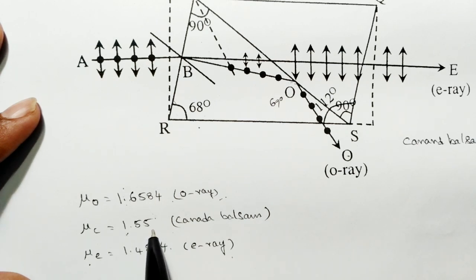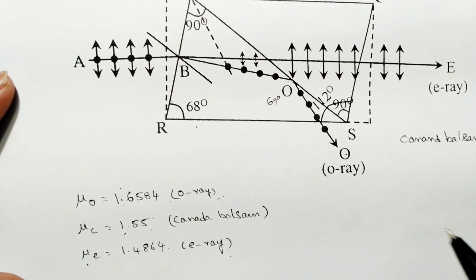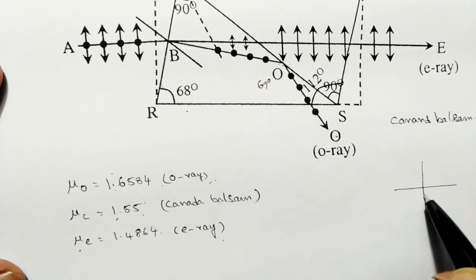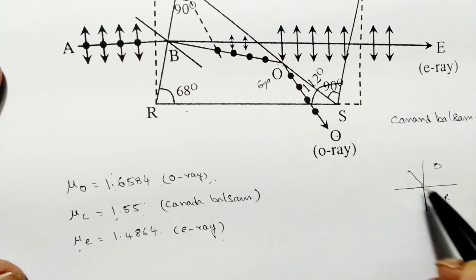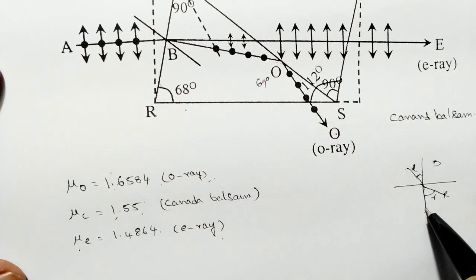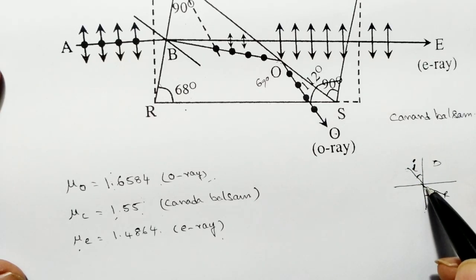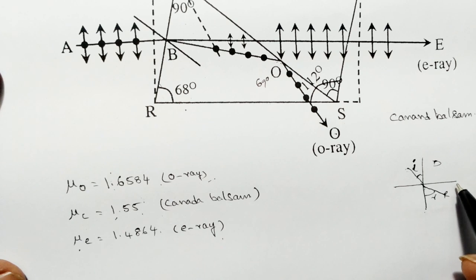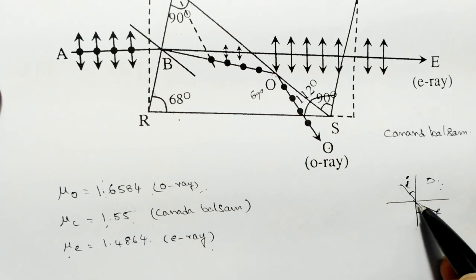The refractive index of the ordinary ray is 1.6584 and that of Canada balsam is 1.55. So the calcite acts as a denser medium and Canada balsam as a rarer medium. When light travels from a denser to a rarer medium, it bends away from the normal. At the critical angle, the refracted beam stays at the interface; beyond it, total internal reflection occurs.